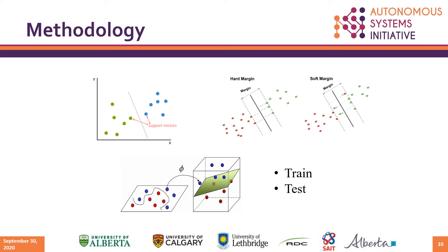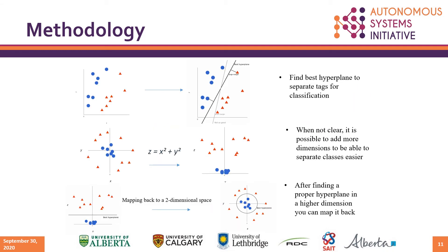A support vector machine separates data using support vectors. You draw a margin or a hyperplane where data points on either side of the margin receive a different classification. Sometimes the hyperplane is hard to find, so it is important to use a kernel — in this case, we used a Gaussian kernel. Sometimes you need to add more dimensions to separate classes more easily, and then bring it back to two-dimensional space. However, that's computationally expensive, which is why we use a kernel to work around that.